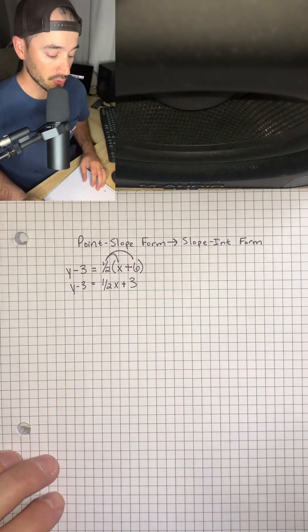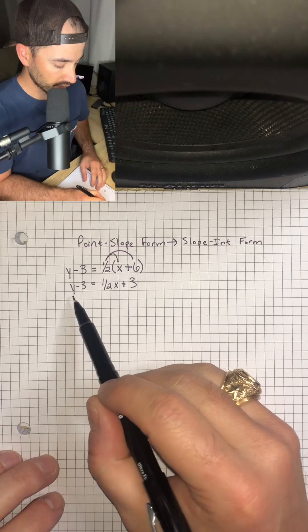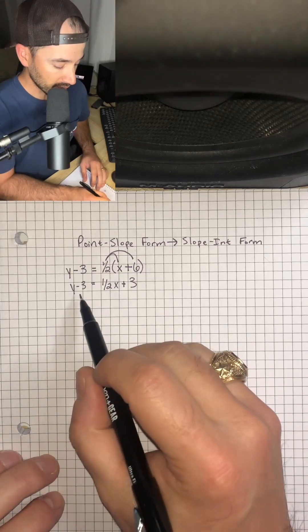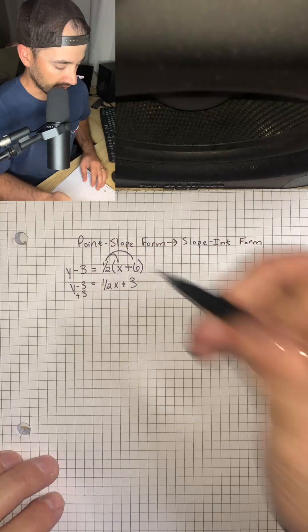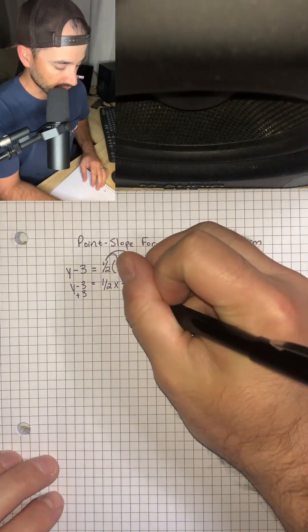Now the only thing we have to do is get that y by itself. And so to do that, we're going to get rid of this minus 3 by adding 3. And what we do to one side, we have to do to the other.